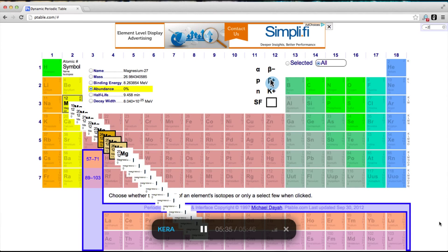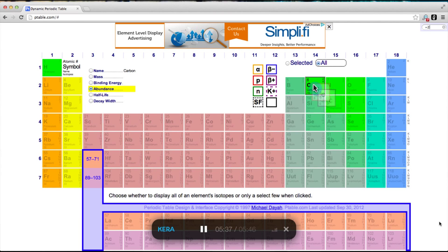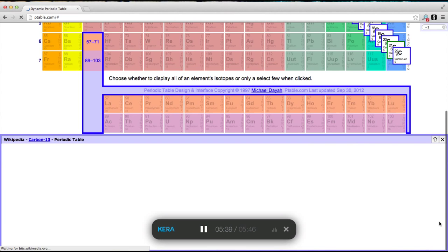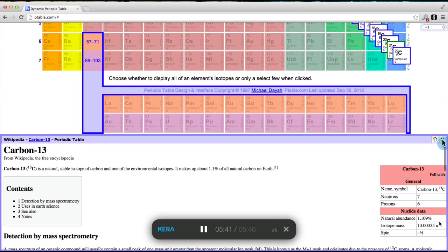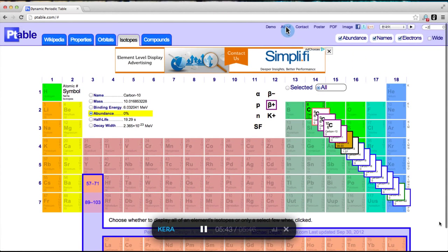A double line indicates double beta decay. Some isotopes can be clicked if they have a Wikipedia entry. The cursor will turn to a hand for these. For a text description of all features, visit the About page. If you have any comments or suggestions, visit the contact form.